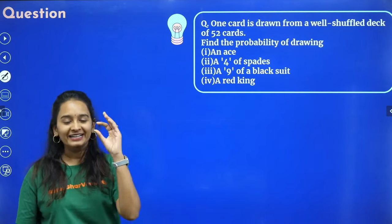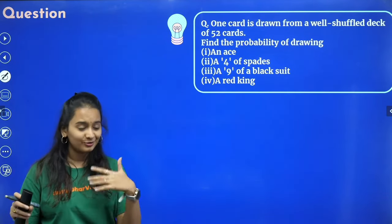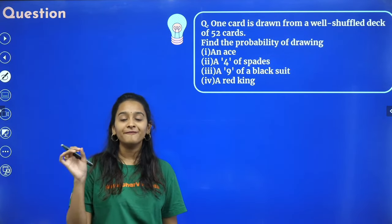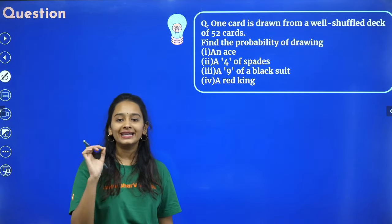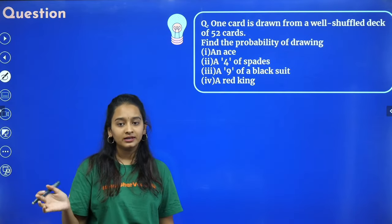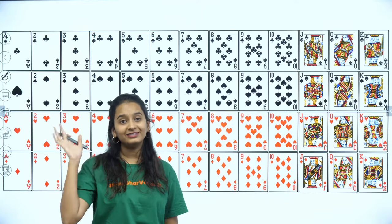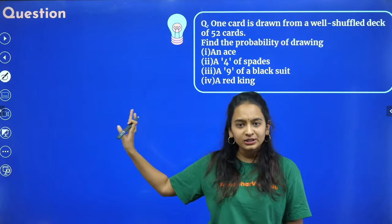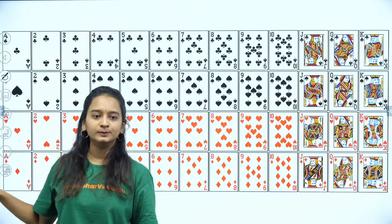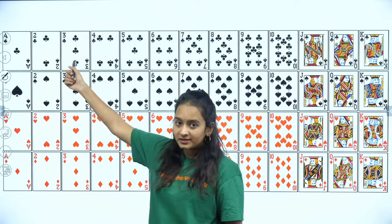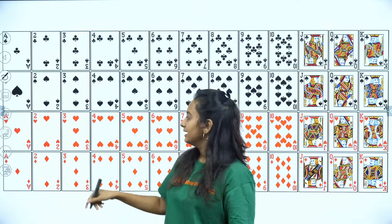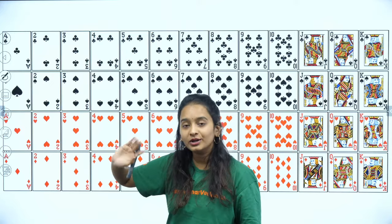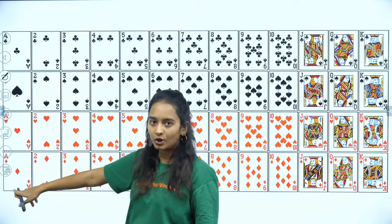Next is the deck of cards question. A card is drawn from a well-shuffled deck of 52 cards. Before solving, you need to know the structure: there are 4 suits — clubs, spades, hearts, and diamonds. Hearts and diamonds are red suits; spades and clubs are black suits. Each suit has 13 cards: Ace, 2 through 10, Jack, Queen, King. Total = 13 × 4 = 52 cards.